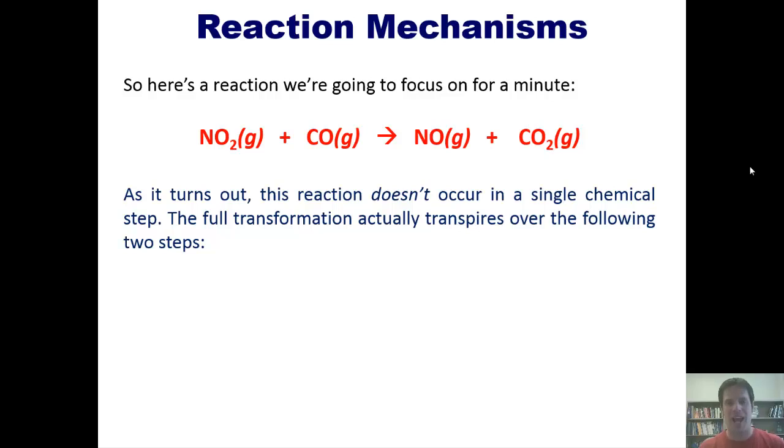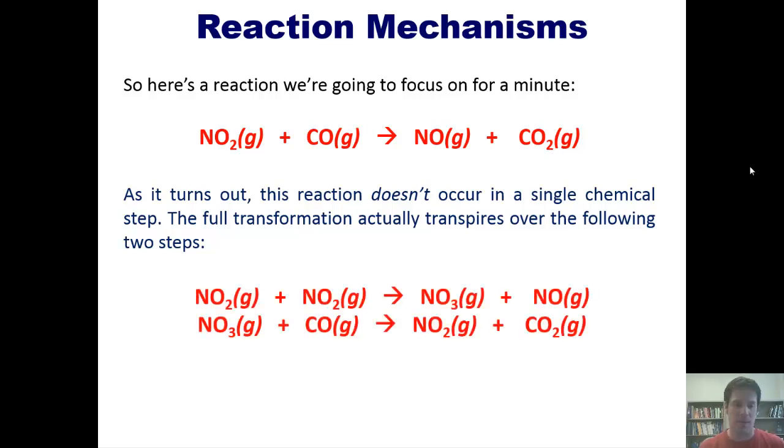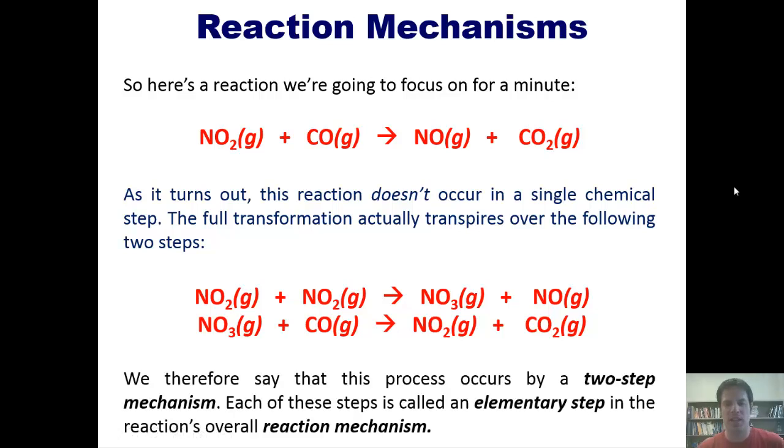The full transformation actually transpires over the following two steps. In the first one, two molecules of NO2 get together and combine collisionally, bam bam bam, to form one molecule of NO3 and one molecule of NO. At this point, the NO3 then reacts with a molecule of carbon monoxide, bam bam bam, to form NO2 and CO2. So in other words, this transformation doesn't happen as simply as the overall reaction would lead us to believe. We therefore say that this process occurs by a two-step mechanism.